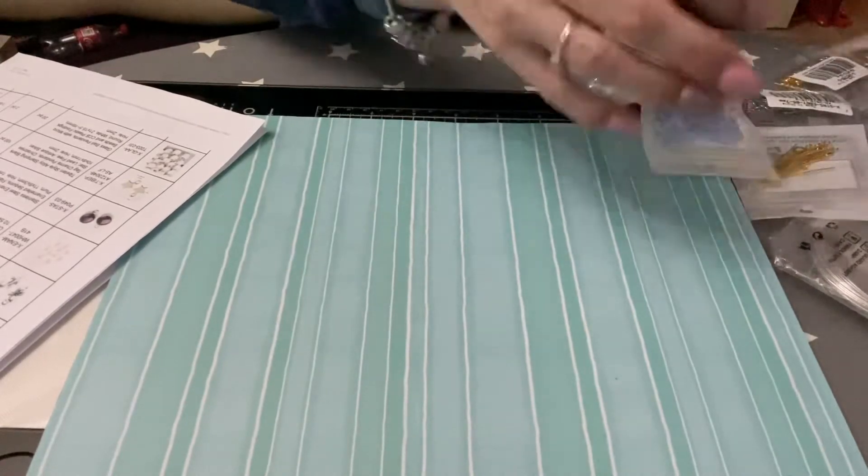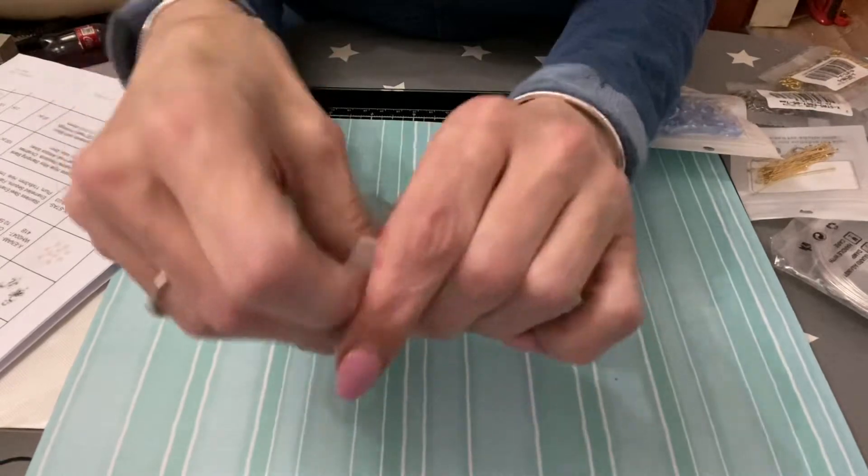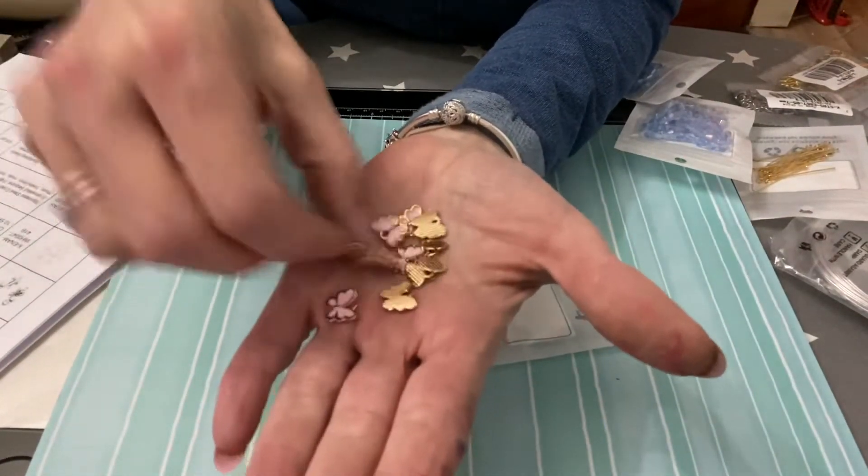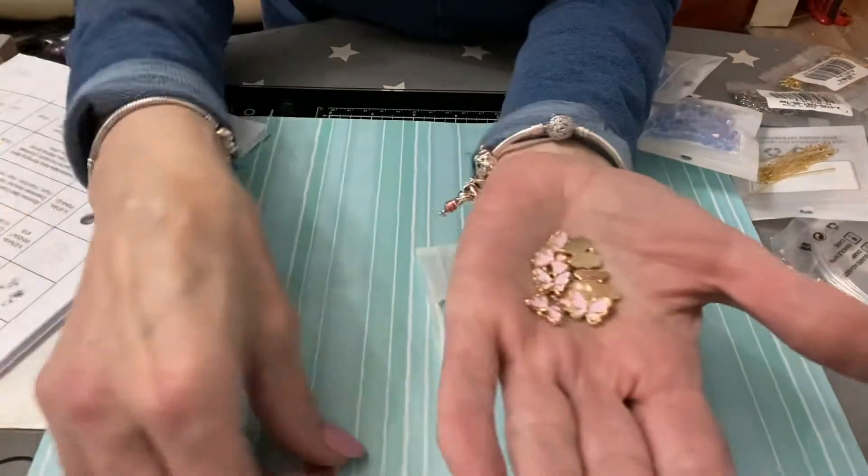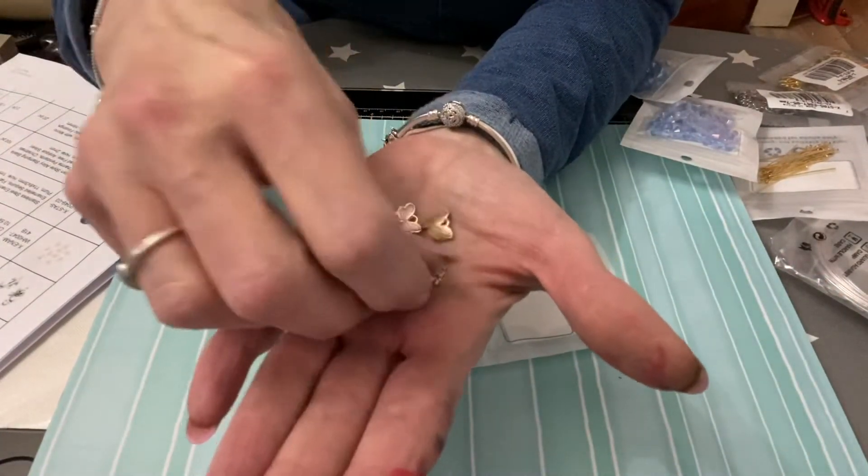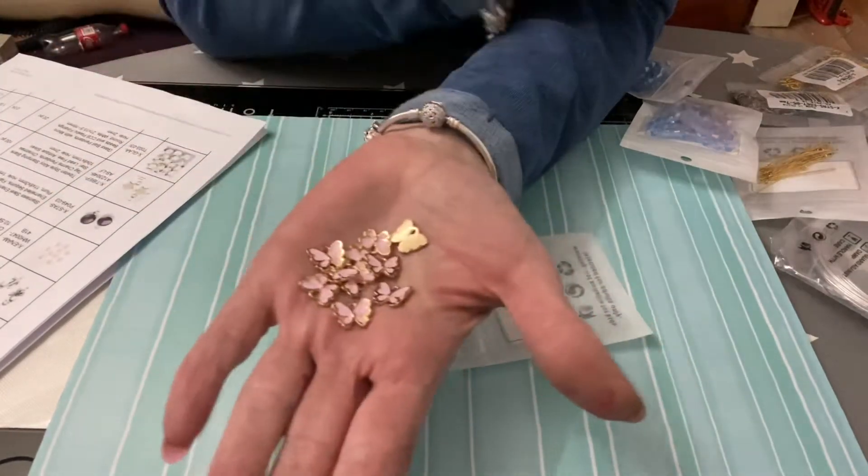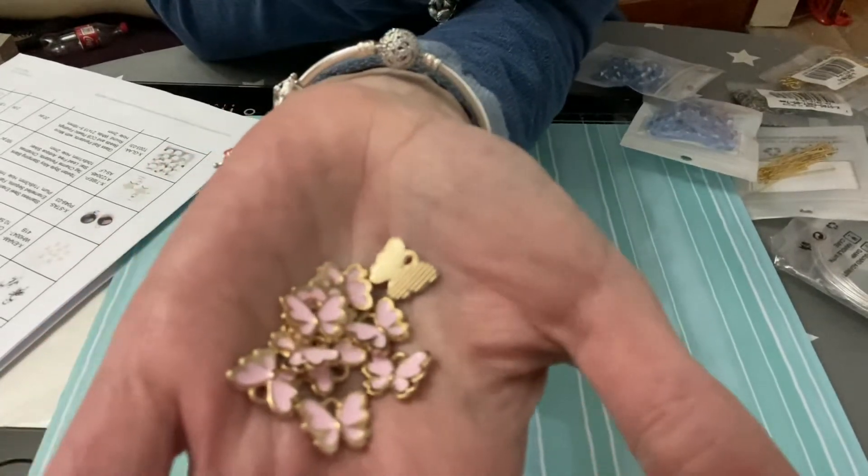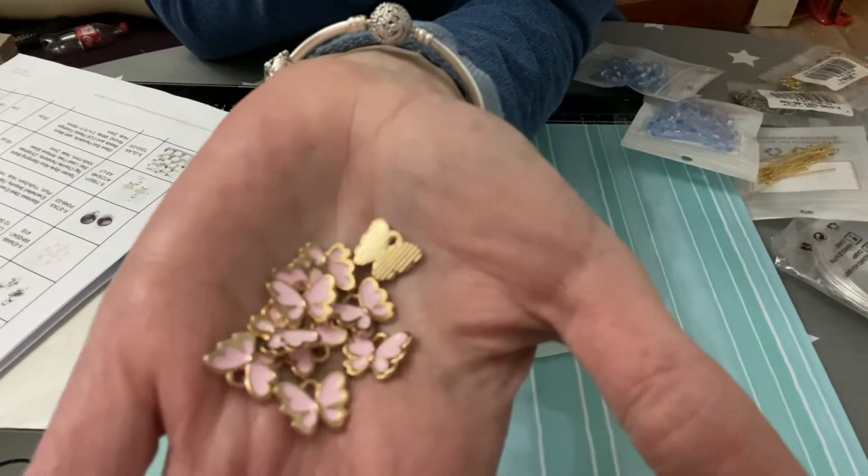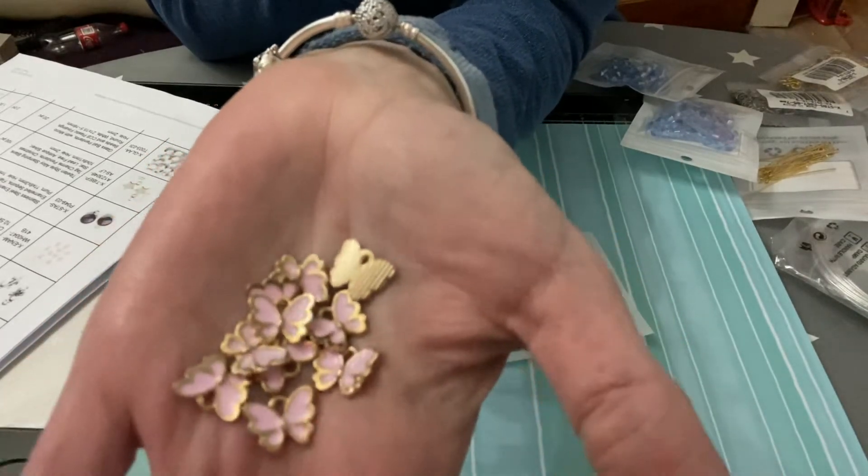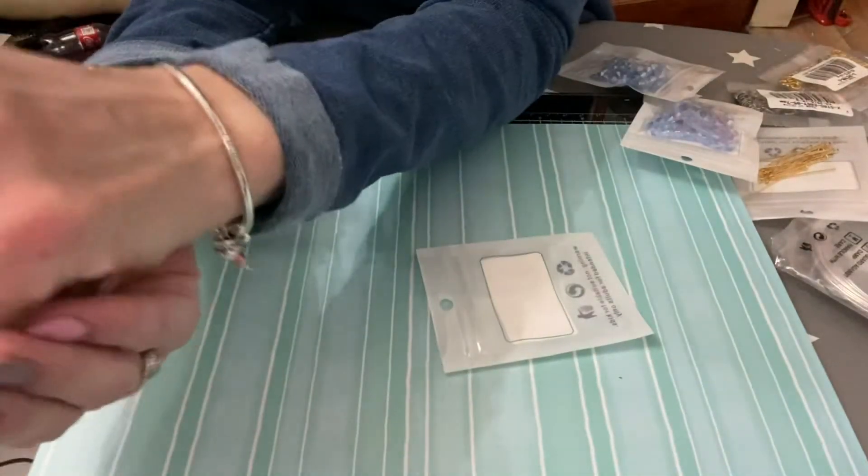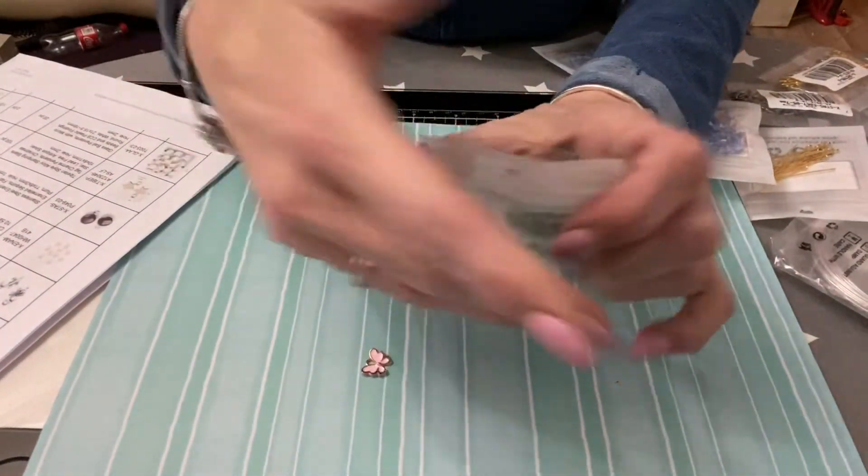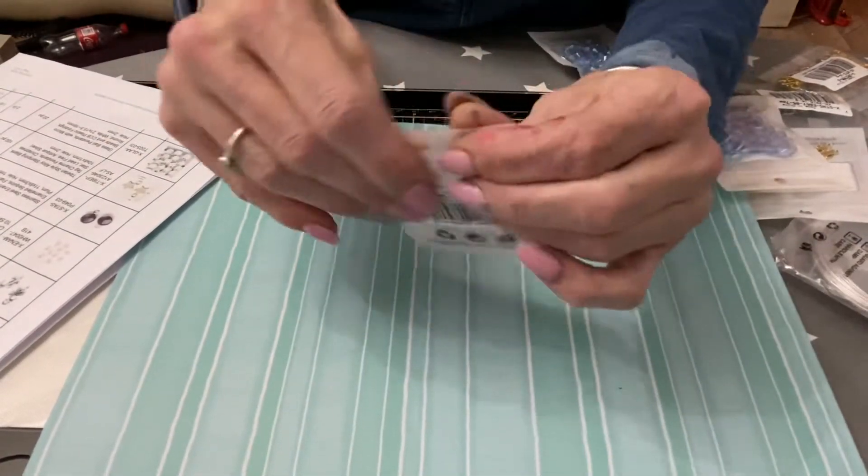I then went for these butterfly charms and they're the same as the cat ones and the heart ones, they've got the gold color and they're just enameled pink enamel. There are 10 in the pack and again they were one pound 22 and they're 10.5mm with a 1.2mm hole.